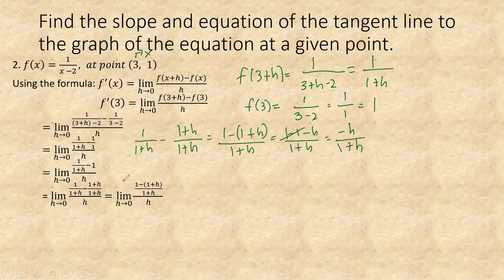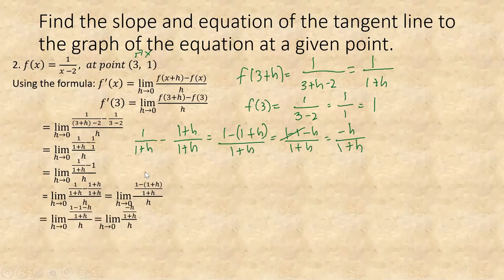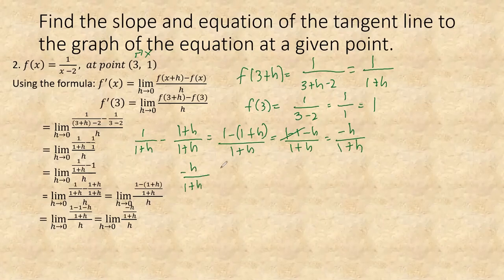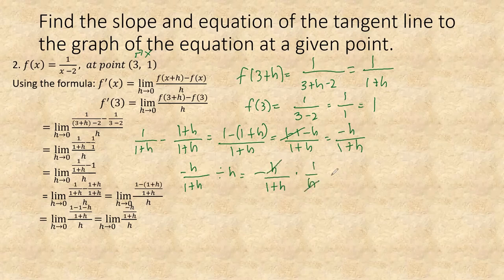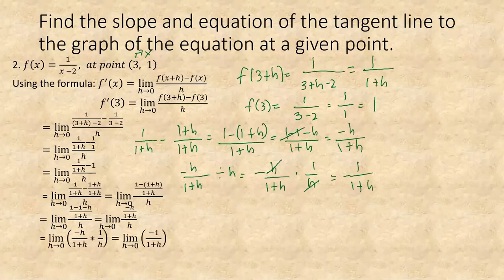So ang gagawin natin is we're going to divide fractions, dividing by h. So ang ikakalabas neto ay negative h over 1 plus h times 1 over h. Ikakancel na natin together, matitira ay negative 1 over 1 plus h. Since our h is 0, we're going to substitute h with 0. So magiging 1 plus 0 na sa baba, tapos i-retain na natin yung numerator natin. So 1 plus 0 is 1, then negative 1 over 1 is negative 1. So ito na po ang slope natin.